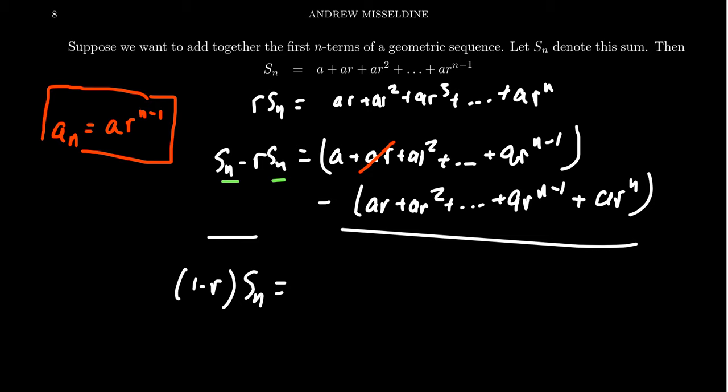You're going to have an AR minus an AR. They will cancel out. You will get an AR squared that cancels with that. Then the AR cubes will cancel, and this will continue all the way down until you get to AR to the n minus 1, cancel AR to the n minus 1. This will leave us with just two terms. A term at the very beginning, which is A, and then you're going to have this negative AR to the n. In which case, if we put those together, we're going to get A minus AR to the n.